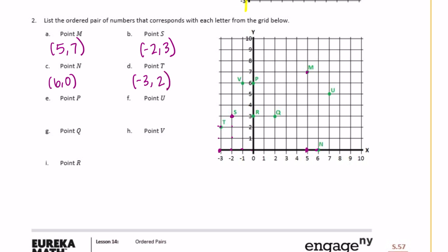Point p is right here. So on the x axis we don't go anywhere, so it's going to be 0. But then we go up 6 on the y. So 0, 6. Point u. Right there. We go over 7 on the x and up 5. So positive 7, 5.